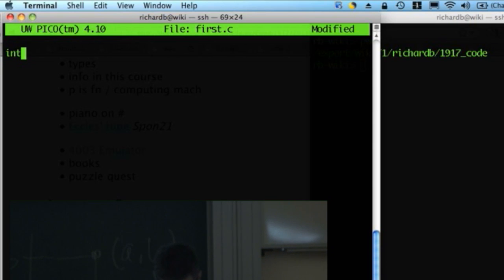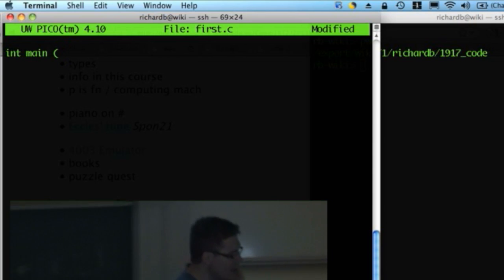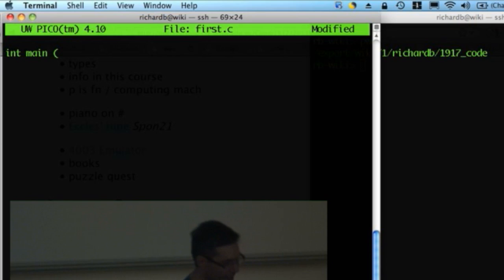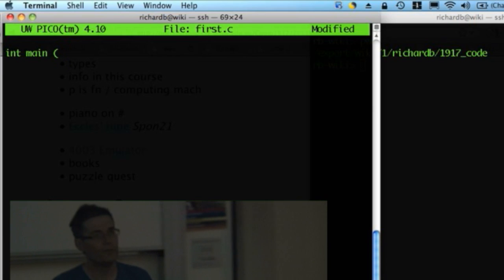Now, C programs always start with a function called main. So I'm going to say int. Can you see that? It does look small to me. You can? All right. Int main. The name of the function is main. A function takes stuff in and puts something out, like the toaster. What did the toaster take in? What did it put out? Toast. Okay. A function takes in stuff and puts stuff out.